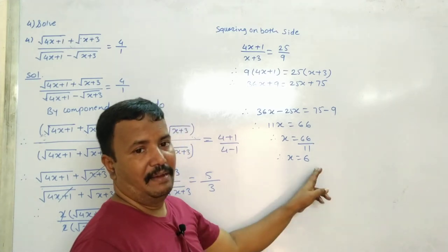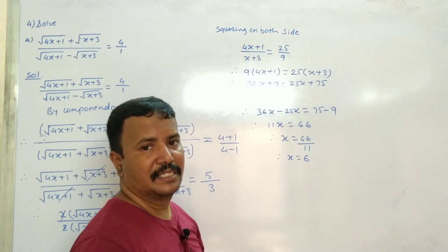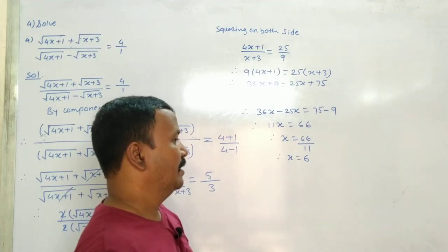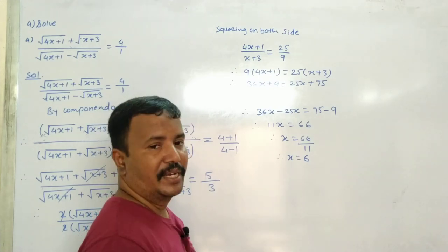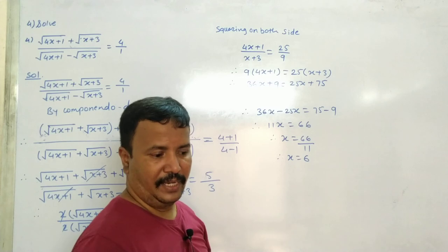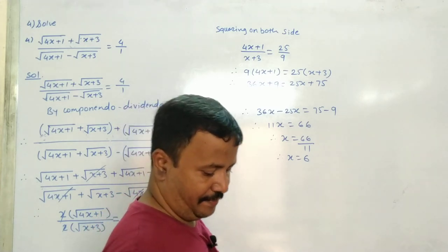Since 11 × 6 = 66, therefore x is equal to 6. This is the solution.